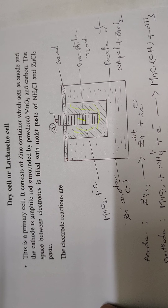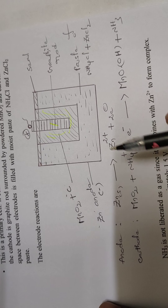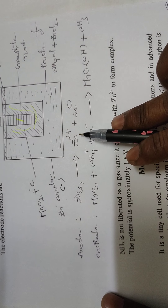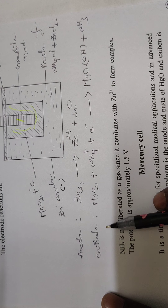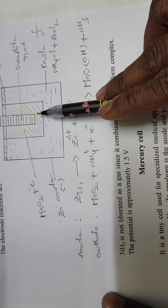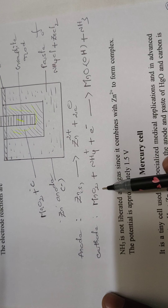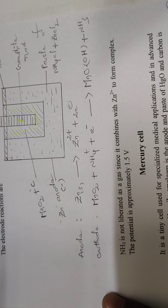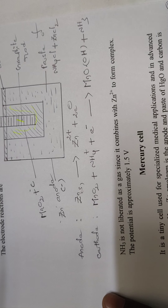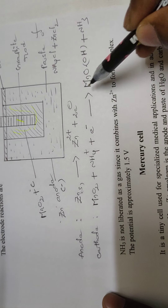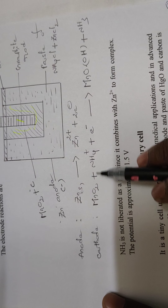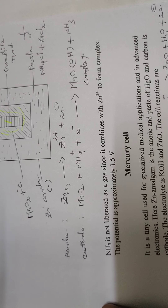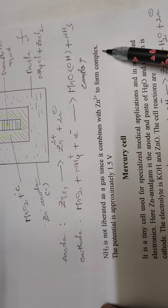The Leclanche cell is a primary cell — a non-rechargeable, dry cell battery. The anodic reaction is: Zn → Zn²⁺ + 2e⁻ (zinc undergoes oxidation). The cathodic reaction is: MnO2 + NH4⁺ + e⁻ → MnOOH + NH3, where MnOOH is a complex. NH3 is not liberated as a gas; it combines with Zn²⁺ to form a complex.